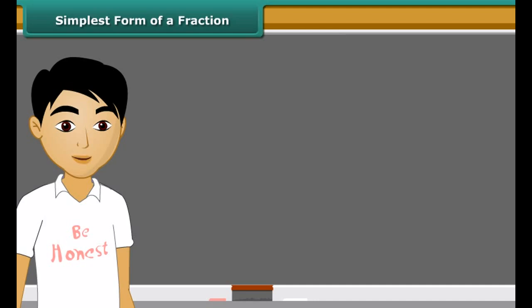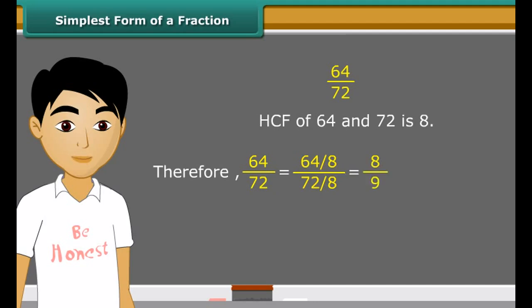Students, the second method to find the equivalent fraction in the simplest form is to find the HCF of the numerator and denominator and then divide both of them by the HCF. Consider fractions 64 upon 72. The HCF of 64 and 72 is 8. We get new fraction 8 upon 9 on dividing the numerator and denominator both by HCF.